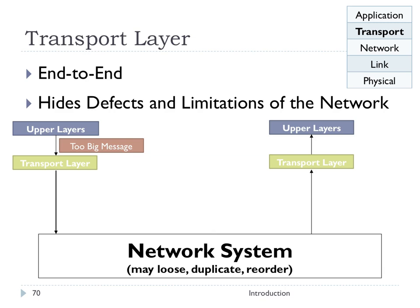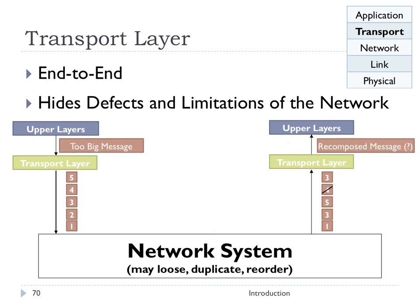Those defects in the network are masked through the abstraction of the transport layer. If a packet is lost, it ensures another is sent. If duplicated, it identifies and discards the extra. If packets are out of order, it reorders them. Additionally, if a message is too large — say one megabyte but the network can only handle 100 kilobyte packets — the transport layer breaks it into chunks, sends them individually, and reassembles them on the other side. Packets may be delivered out of order, packet two might not arrive, and packet four could be corrupted; the transport layer identifies and fixes these issues.